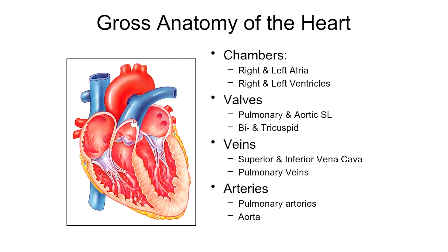Blood goes from the right atrium down into the right ventricle. The right ventricle contracts and pushes that blood up into the pulmonary trunk. The pulmonary trunk splits — here's a branch that goes off to the left and a branch that goes off to the right — because this blood is making its way to the lungs, and we have a left lung and a right lung, so the vessel splits to allow blood to go to both lungs to pick up oxygen.